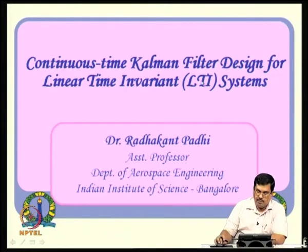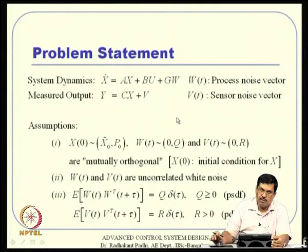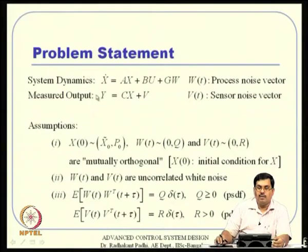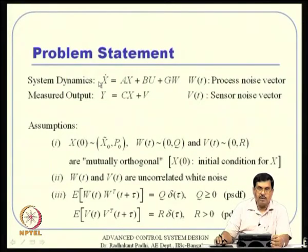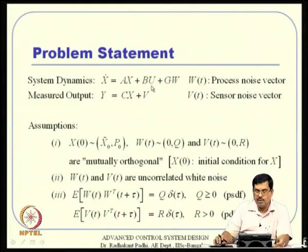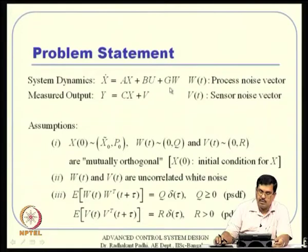For continuous-time Kalman filter design for a linear time-invariant system, the system dynamics is x-dot = A*x + B*u + G*W, and the measurement equation is y = C*x + V, where W is the process noise vector and V is the sensor noise vector. W directly affects the system states, and since we use Y for estimation — and Y is corrupted by sensor noise — these two noise sources affect the performance of the controller.